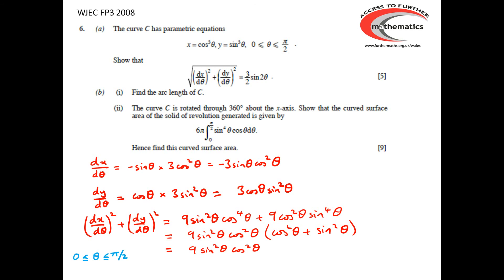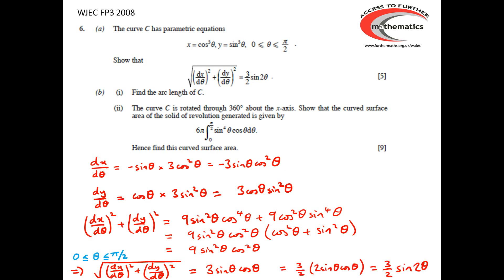Remembering that θ lies between 0 and π/2, sin θ and cos θ are both positive, so we can safely say that the square root of (dx/dθ)² + (dy/dθ)² is 3 sin θ cos θ. That's the same as (3/2) × 2 sin θ cos θ, which is exactly (3/2) sin 2θ. That completes the first part of the question.